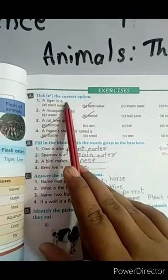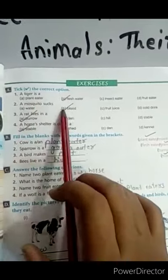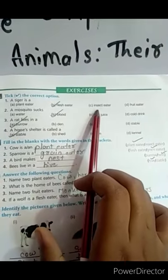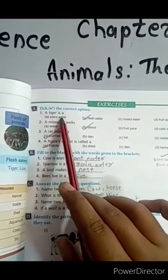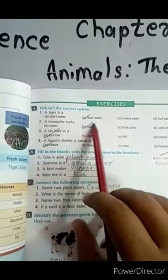A tiger is a plant eater, flesh eater, insect eater, or fruit eater. The correct answer is a tiger is a flesh eater.